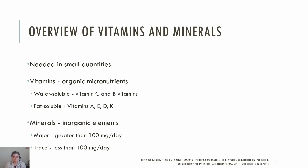Fat-soluble vitamins are first incorporated into chylomicrons along with fatty acids and transported through the lymphatic system to the bloodstream and then onto the liver. Because fat-soluble vitamins are absorbed along with dietary fat, if a meal is very low in fat, the absorption of fat-soluble vitamins in that meal may be impaired. Fat-soluble vitamins A, E, D, and K can be stored in the liver and fatty tissues. Vitamin A can be found in orange-colored vegetables like carrots, vitamin E in nuts and oils, vitamin D in fortified dairy, and vitamin K in leafy greens.